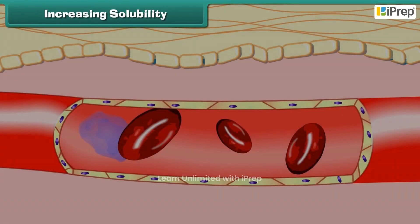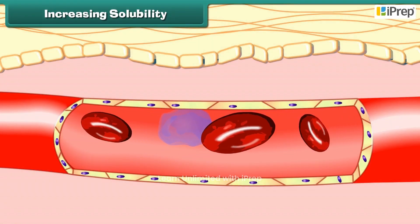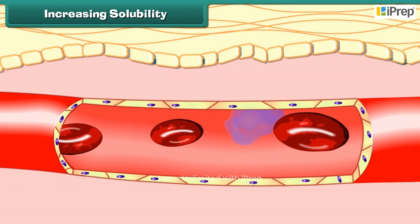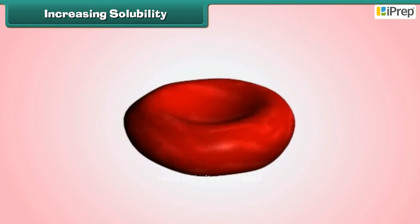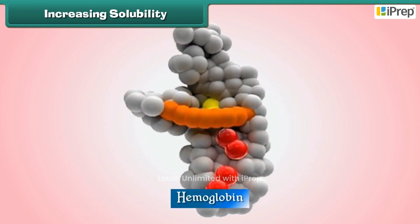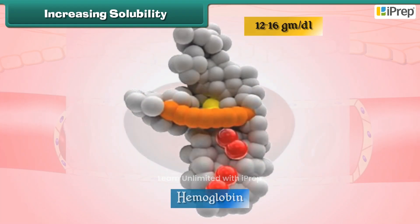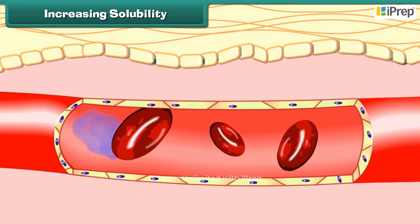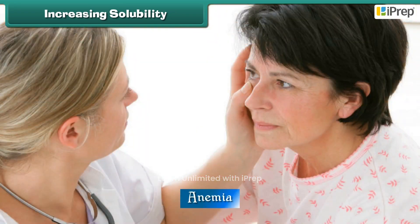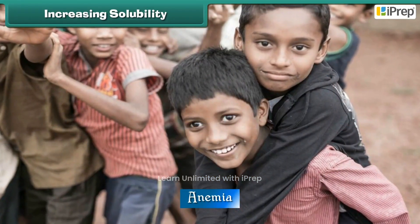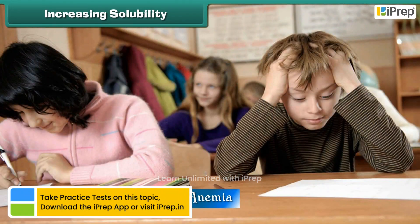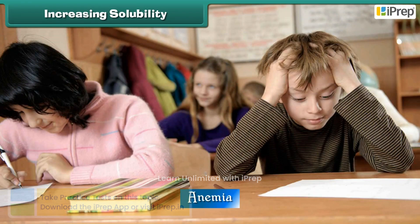The malaria parasite affects the red blood cells and spreads throughout the body. The red blood cells contain hemoglobin, with a normal range of 12–16 gm per dL. A lesser amount of hemoglobin or iron in the blood causes anemia. Due to anemia, children do not grow well, their energy levels are low, and their ability to study is also affected.